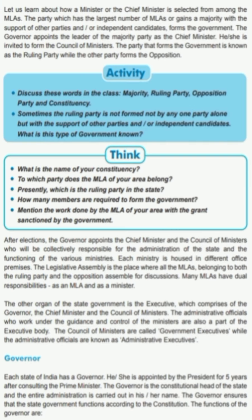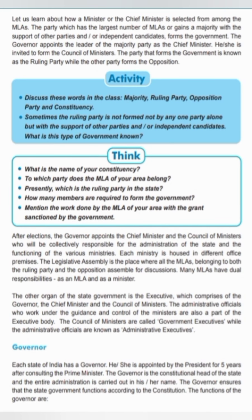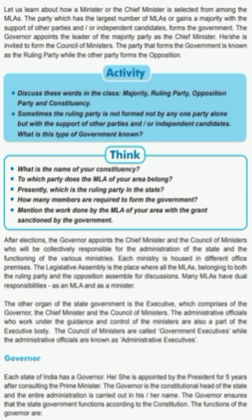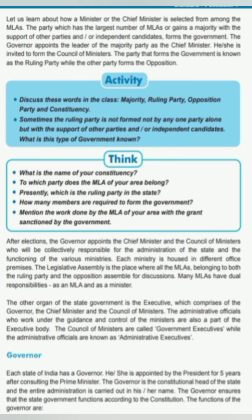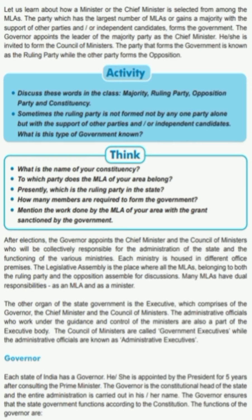The Council of Ministers are called Government Executives, while the Administrative Officials are known as Administrative Executives. Each state of India has a Governor, appointed by the President for five years after consulting the Prime Minister. The Governor is the Constitutional Head of the State, and the entire administration is carried out in his or her name. The Governor ensures that the State Government functions according to the Constitution.